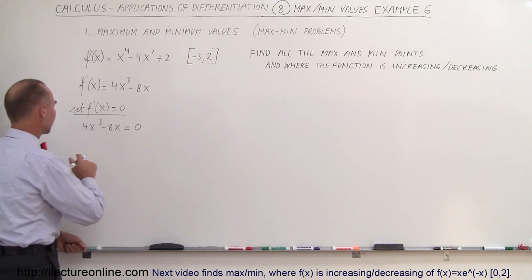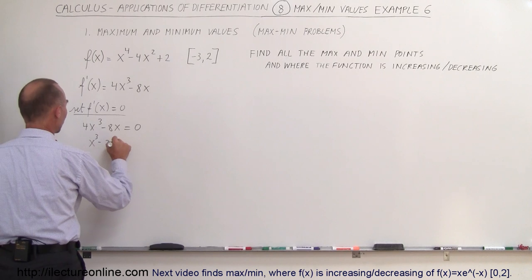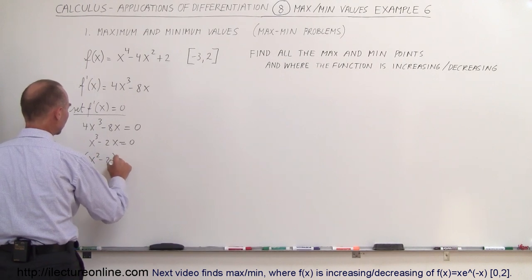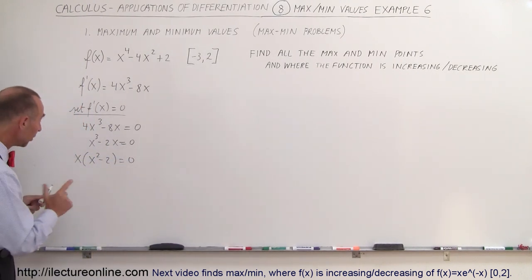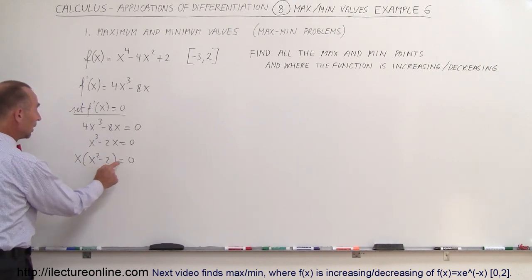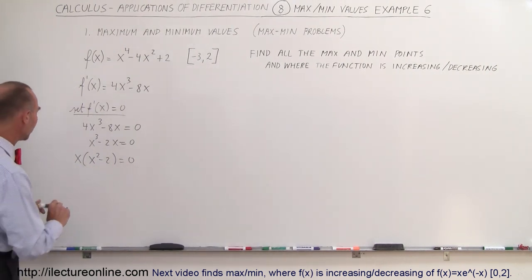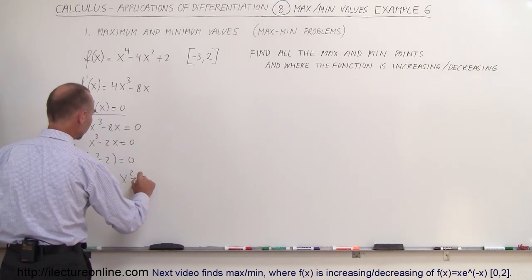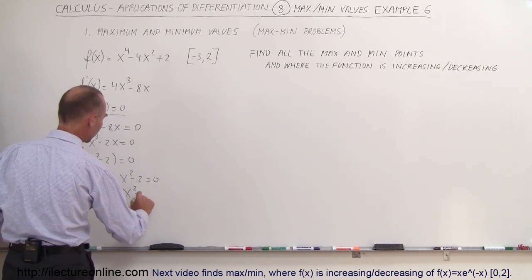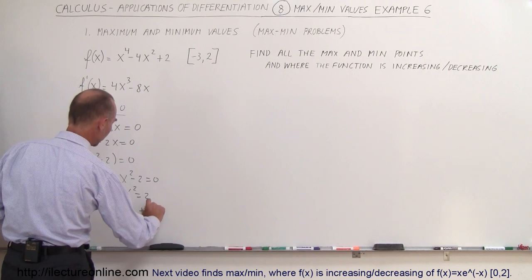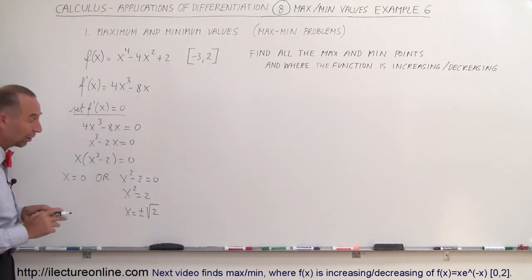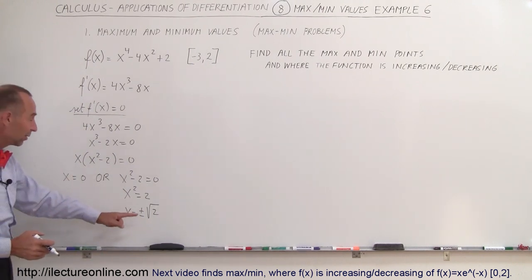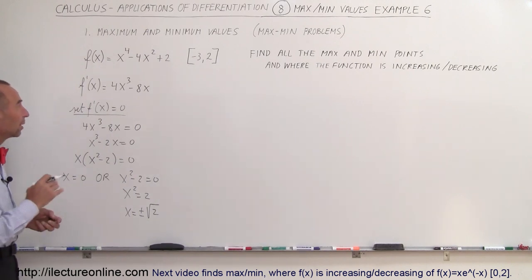We can divide both sides by 4 to simplify, so this becomes x cubed minus 2x equals zero. We factor out the x: x times (x squared minus 2) equals zero. Since the two factors multiply to zero, either one must be zero, which means x equals zero, or x squared minus 2 equals zero, giving x squared equals 2, so x equals plus or minus the square root of 2. There are three values — x equals zero, x equals positive square root of 2, and x equals negative square root of 2 — where we will find a max or minimum.